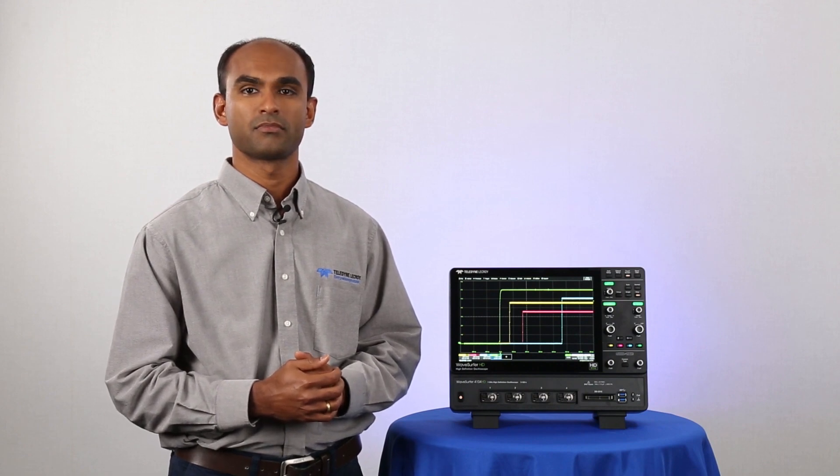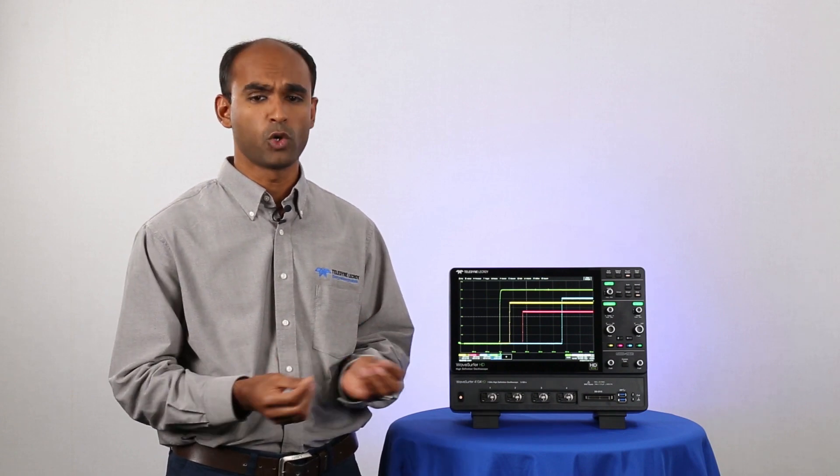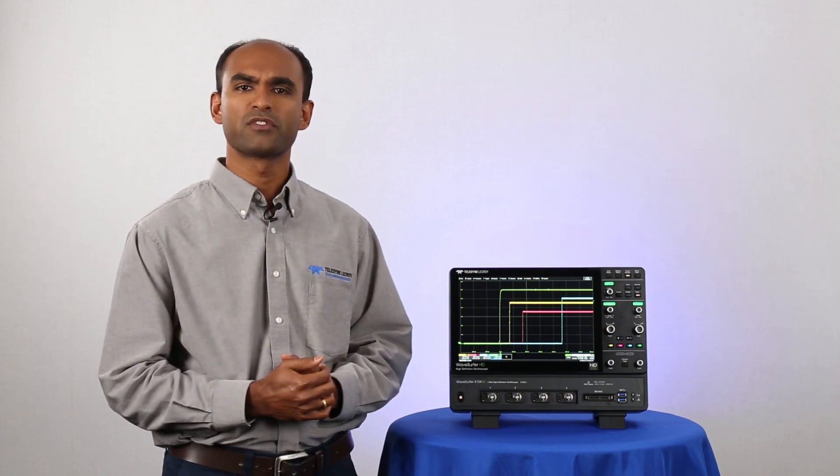How do I probe power rails? We have a specialized rail probe. It sounds expensive. Oh, you can build your own probe. You take a coaxial cable, solder down the center conductor and the shield, and terminate it straight into the 1 megaohm input of the scope.